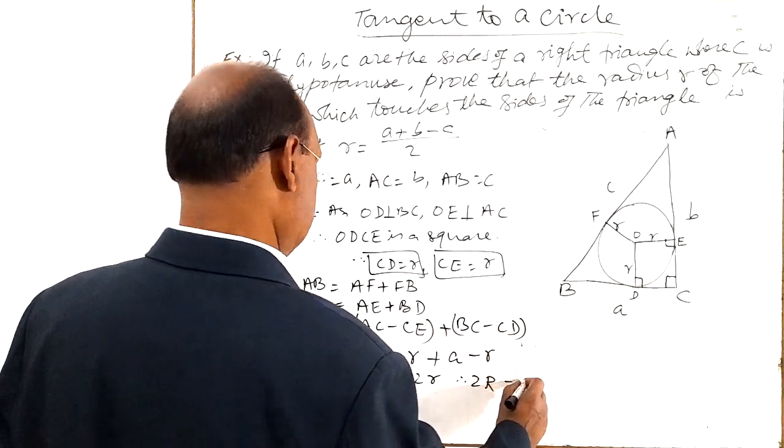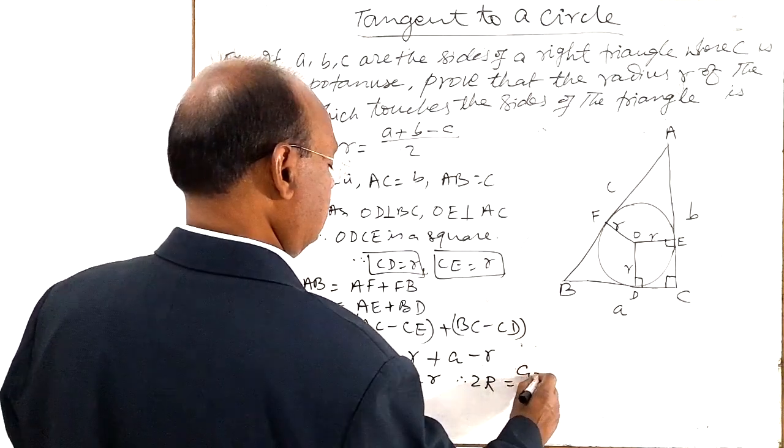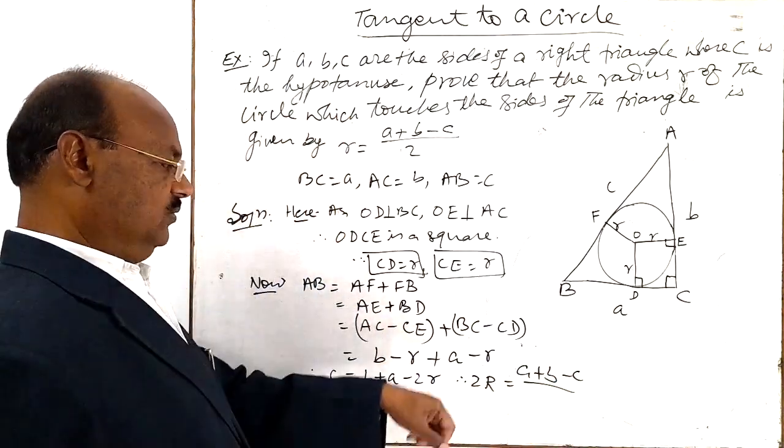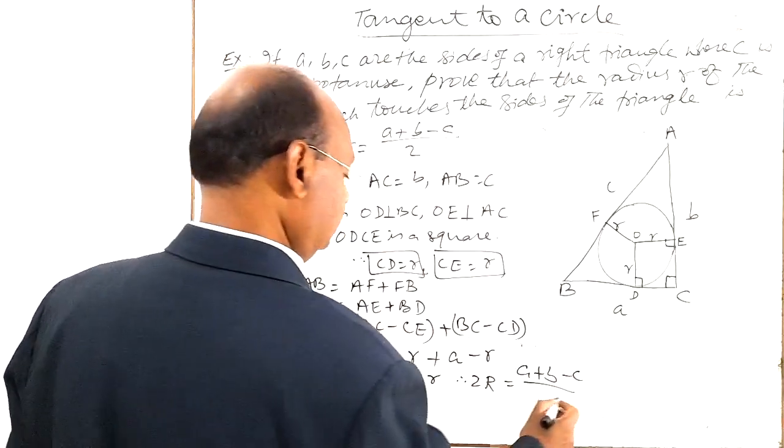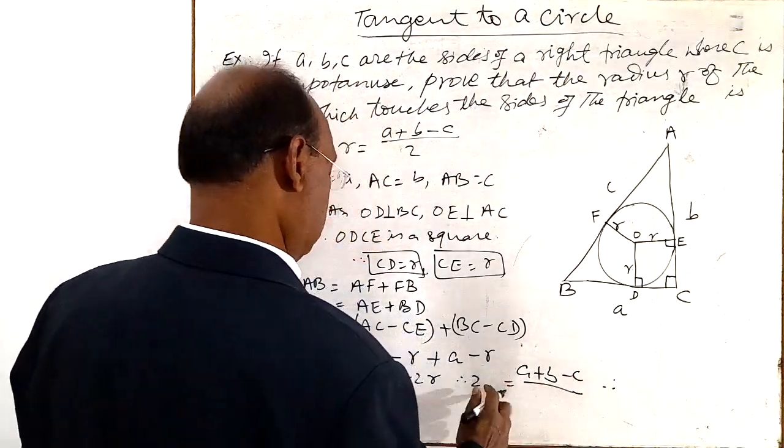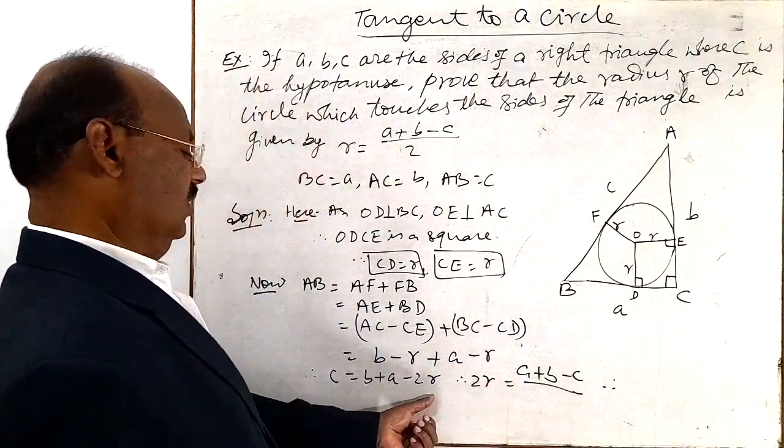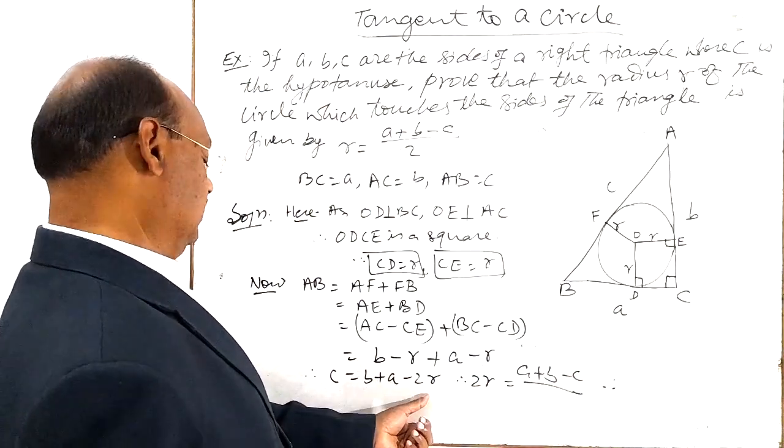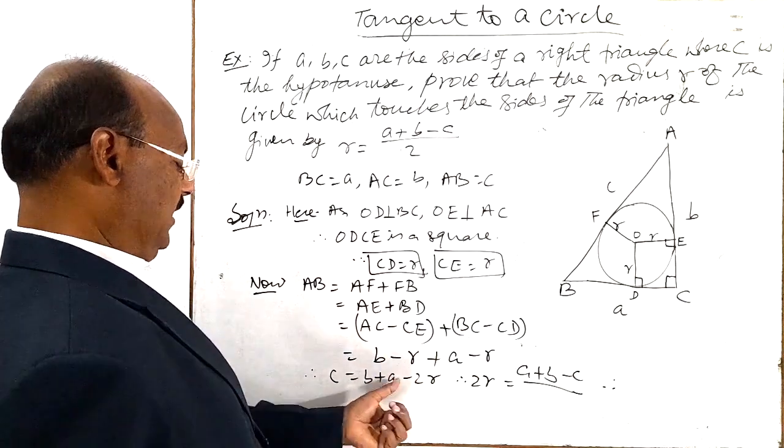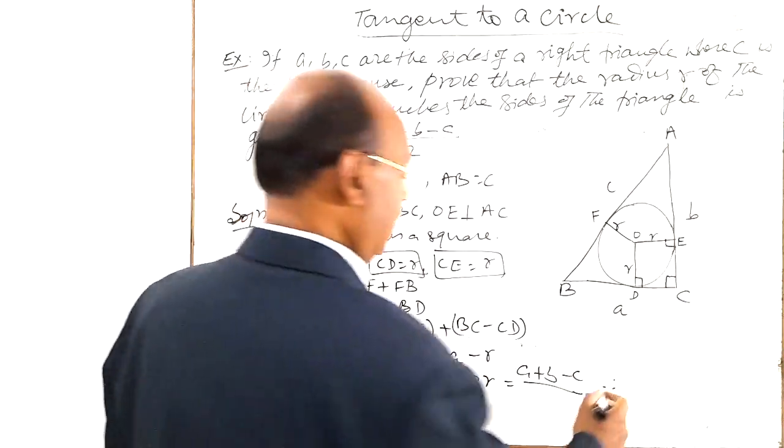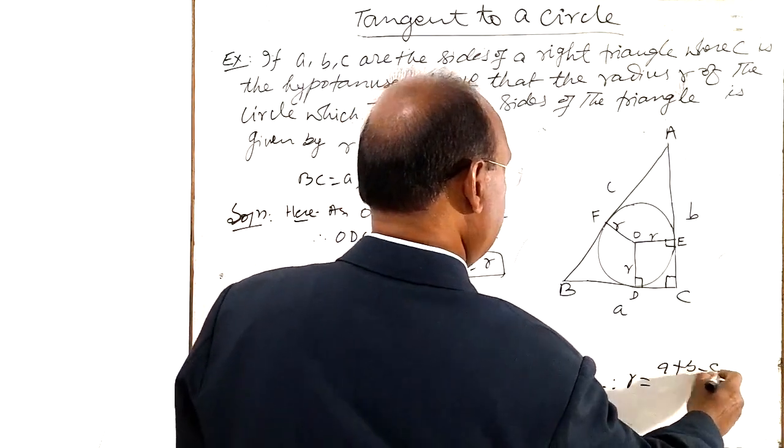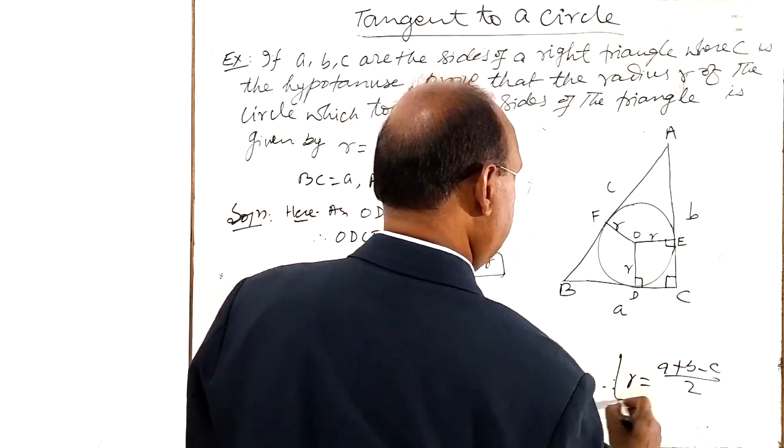This C has been transferred to right hand side. And sorry, you write a small r here. We have a small r. So 2R is equal to 2R has been transposed to this side. So A plus B minus C. And therefore R is equal to A plus B minus C divided by 2.